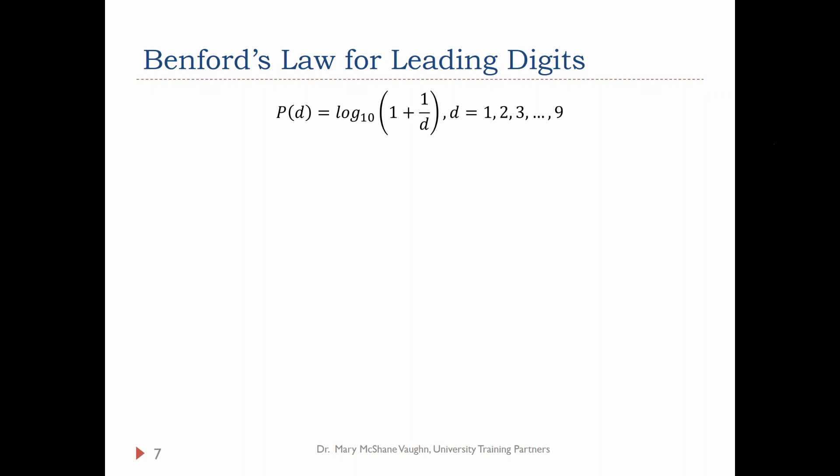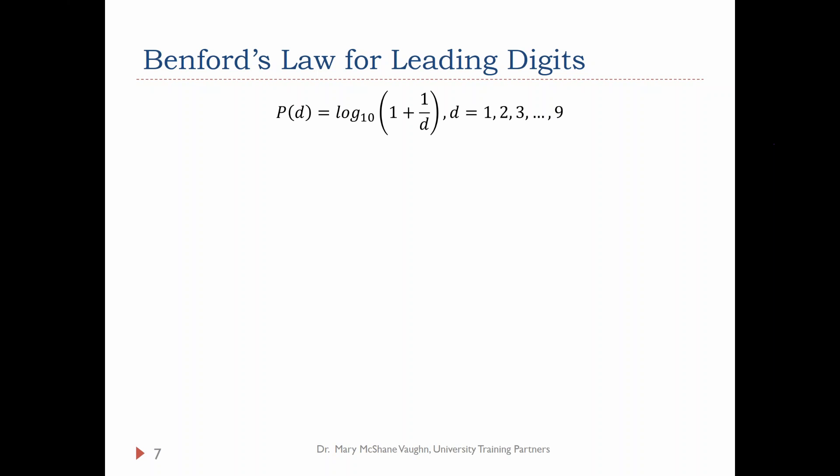Looking at that, this is what the probability distribution looks like — it's definitely not uniform. Benford looked at thousands and thousands of data sets: areas of rivers, areas of countries, scientific constants, all sorts of things. He kept seeing the same phenomenon with the leading digits. The number 1 occurs about 30% of the time. Then as we go on with successive leading digits, the probability of that occurring goes down. A 3 is going to show up more than a 4, which shows up more than a 5, and so on. We can really exploit this probability distribution to catch people who are falsifying data.